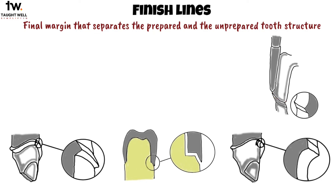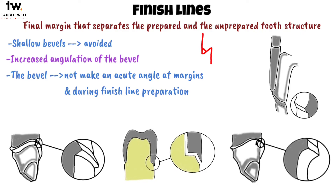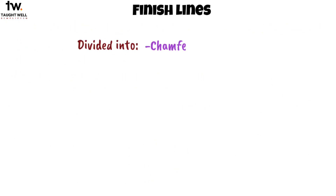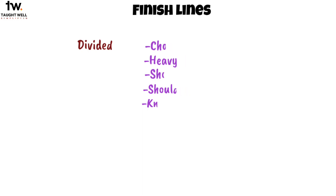Shallow bevels parallel to the occlusal surface margin should be avoided. There should be increased angulation of the bevel. The bevel should not make an acute angle at margins during finish line preparation, and the tooth should not be reduced greater than half of the width of its dimension. There are different finish line configurations, divided into chamfer, heavy chamfer, shoulder, shoulder with bevel, and knife edge.